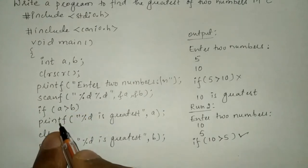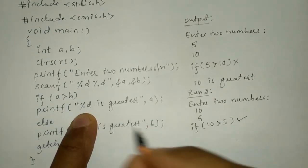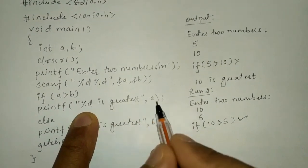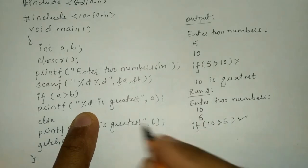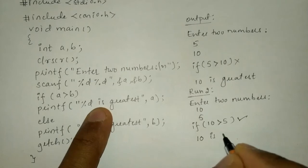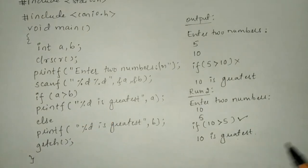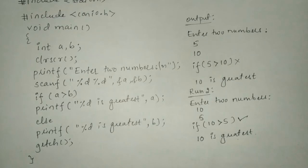If it is true then the first statement will get executed. So what it displays, it is going to display the value stored in this variable called a. So a is holding 10. So here it is going to display 10 is greatest.